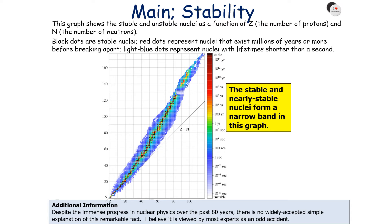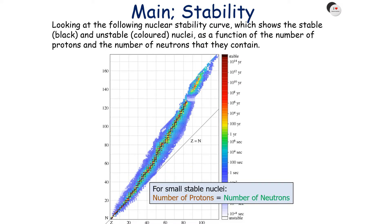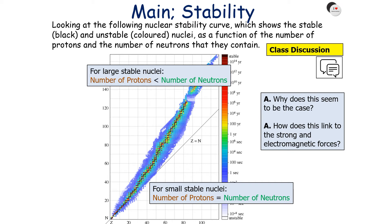This graph shows us the stable and unstable nuclei in the universe as a function of Z, the number of protons, and N, the number of neutrons. In this diagram, the black dots are stable nuclei, the red dots represent nuclei that exist for millions of years or more before they decay, and the light blue dots represent nuclei with lifetimes shorter than a second. The stable and nearly stable nuclei form a band in this graph. For stable nuclei, the number of protons equals the number of neutrons, but for larger stable nuclei the number of neutrons is greater than the number of protons.